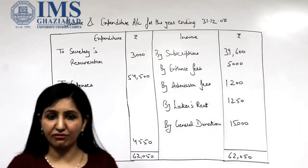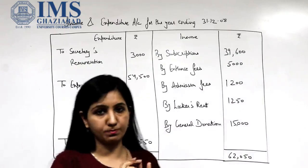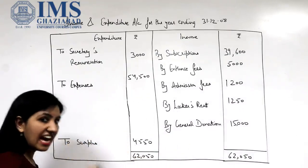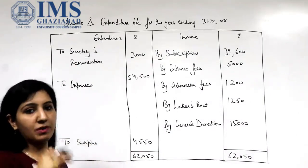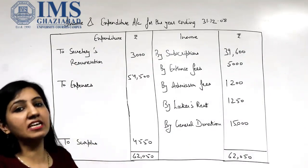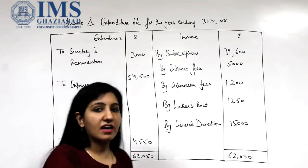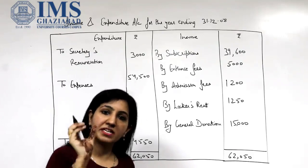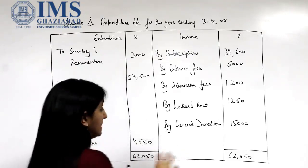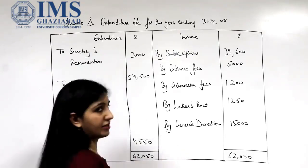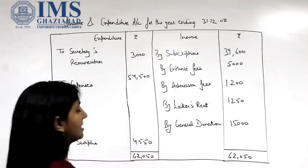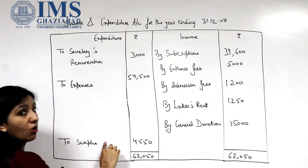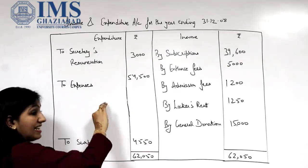First of all, what is the difference between the two? We use terminologies like cash receipt and cash payment, which may be pertaining to the previous year, current year, or the coming year, when we talk about a receipt and payment account. But this is totally different. In an income and expenditure account, we try to find out surplus or deficit. This is the same as a profit and loss account.